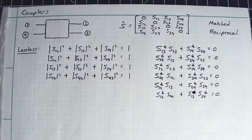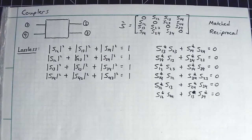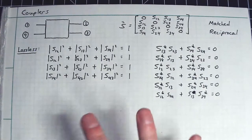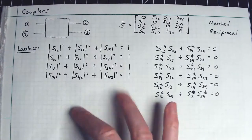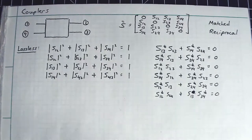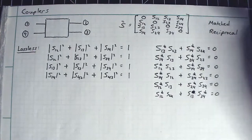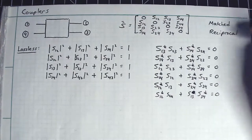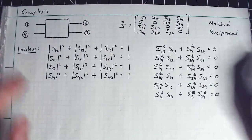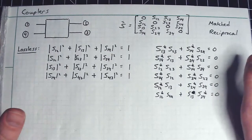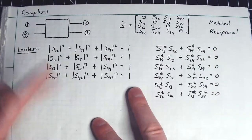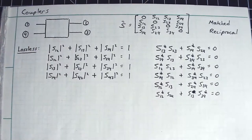Let's move on to the notion of a coupler, or more specifically, what's called a directional coupler. Remember, in the previous lectures, we explored a three-port network and found that we could not have all three conditions satisfied simultaneously. We could not have it matched, reciprocal, and lossless all at once — you could pick two, but not all three at the same time.